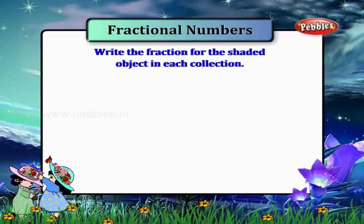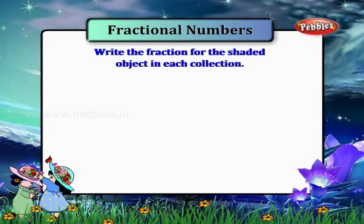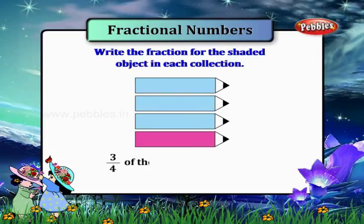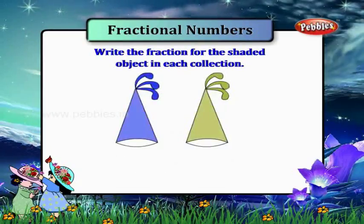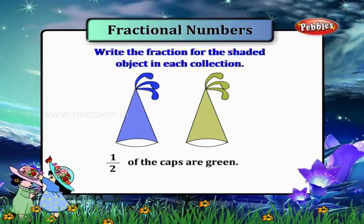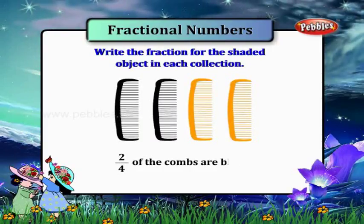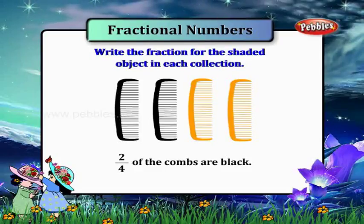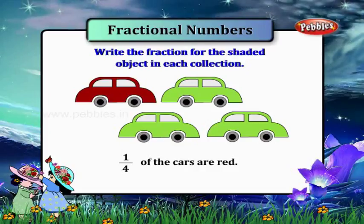Write the fraction for the shaded object in each collection. Three fourths of the pencils are blue. One half of the caps are green. Two fourths of the combs are black. One fourth of the cars are red.